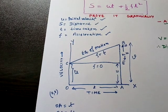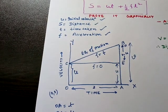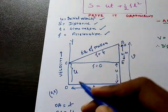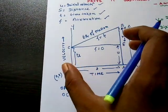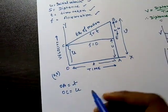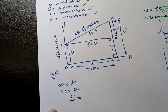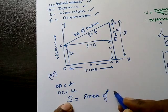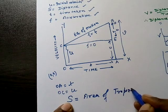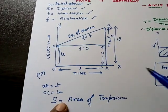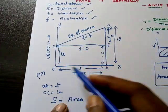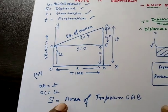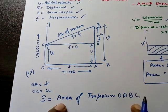To find an expression for the distance traveled by a body with initial velocity and acceleration, we need to find the whole area of the graph. The shape here is a trapezium — the quadrilateral OABC — so the distance traveled equals the area of the trapezium OABC.